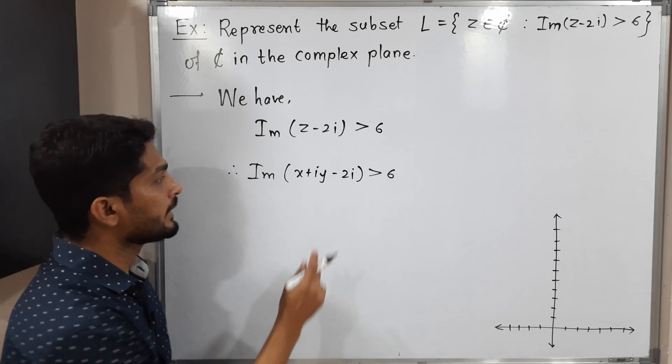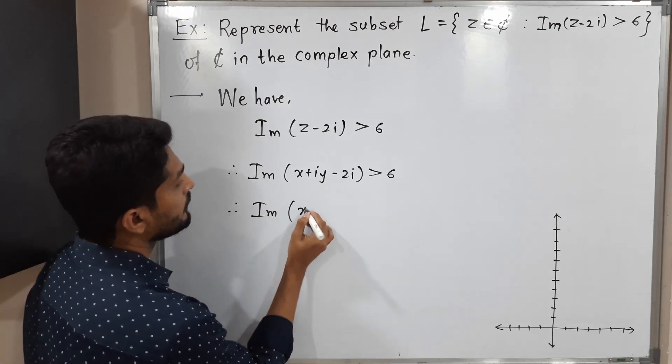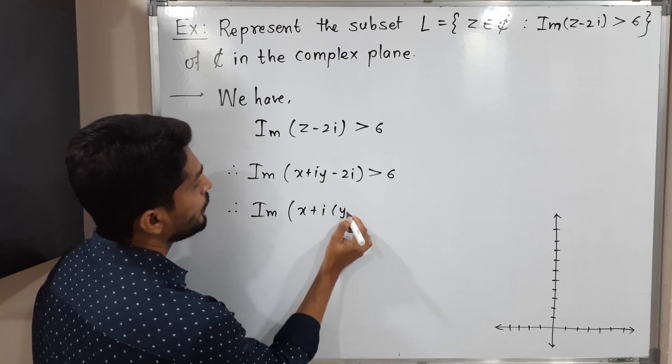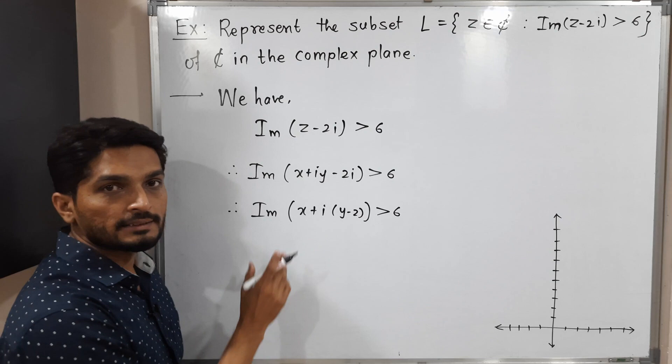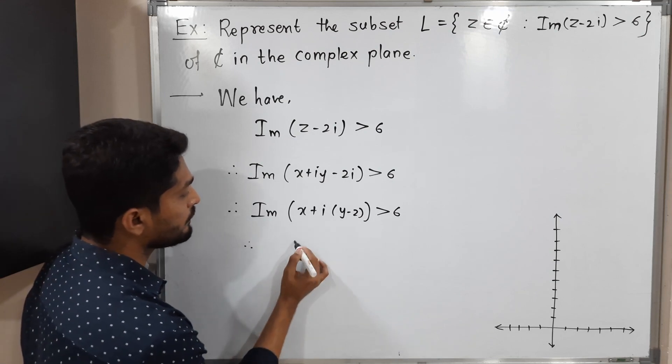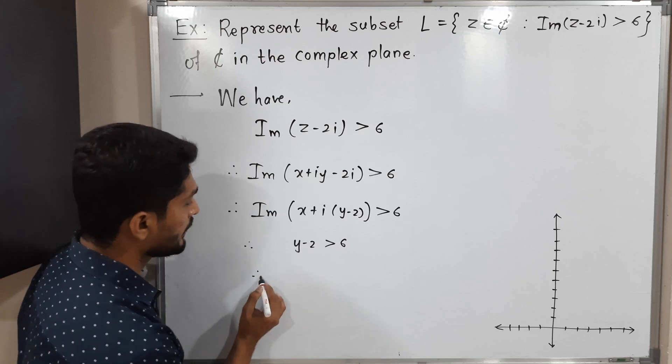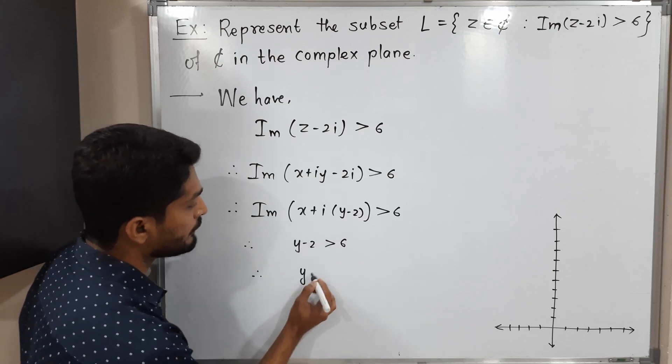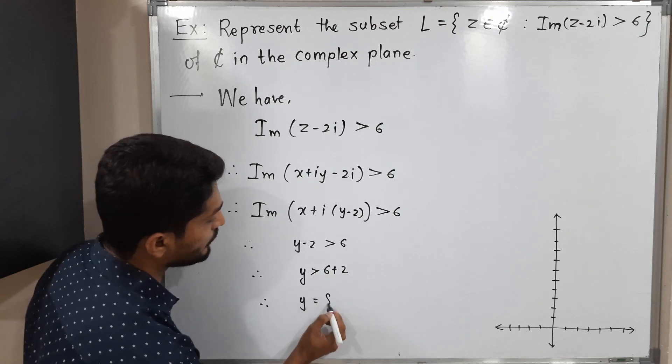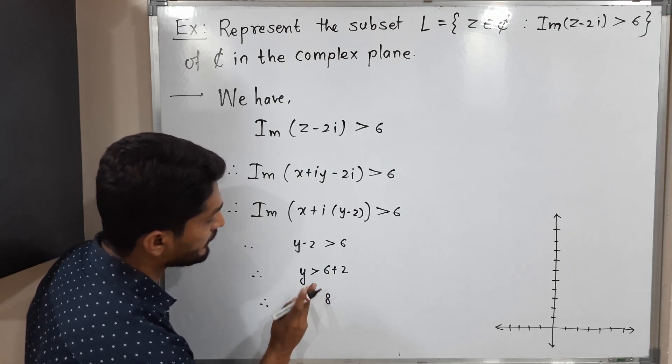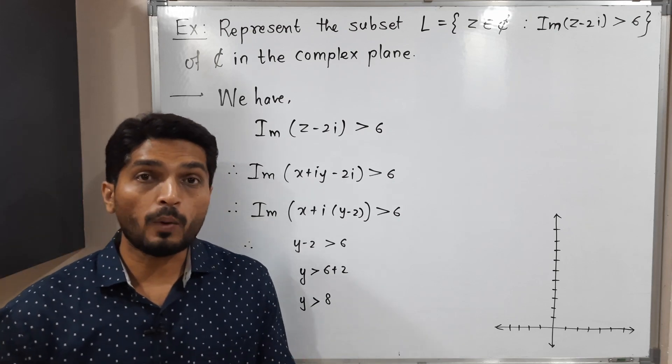I will collect imaginary part, that means I will take i common. Imaginary part of x plus i times (y minus 2) greater than 6. Its imaginary part which is obviously y minus 2, so we get it is greater than 6. Let us shift 2 to the other side, there will be addition 6 plus 2, therefore y is strictly greater than 8.